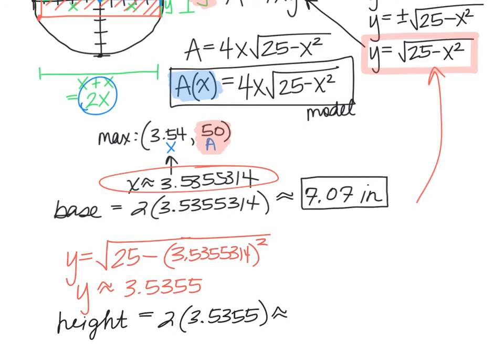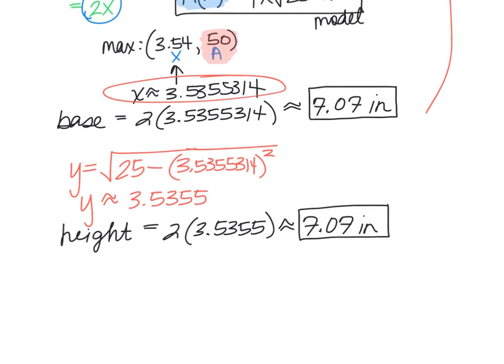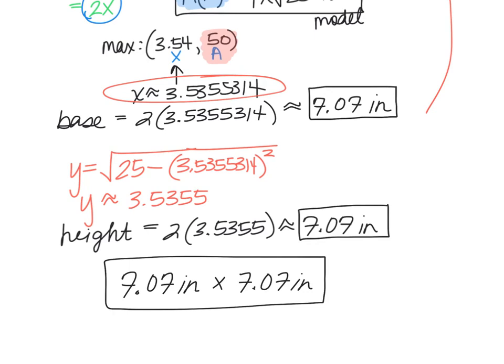Which is about 7.07. It's a little off, it's not exactly 7.07, but again we were rounding some of these values. So this tells me that my dimensions of the rectangle, we can say that the dimensions are 7.07 inches by 7.07 inches, which means that we actually have a square. The largest rectangle that we can inscribe within a circle will actually be a square.